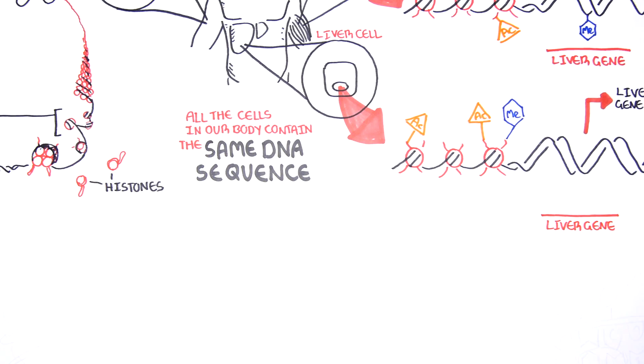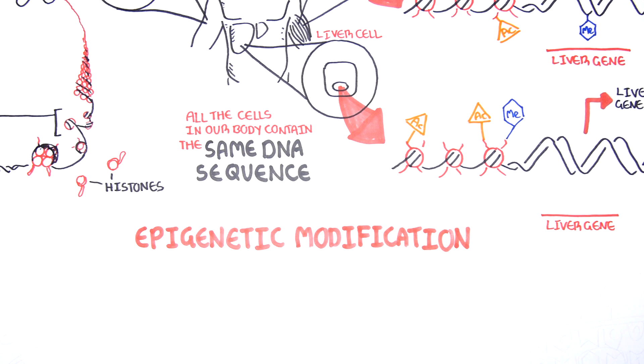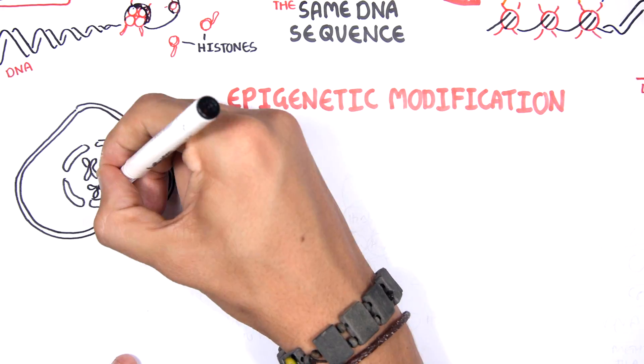These modifications are known as epigenetic modifications. Epi is Greek for above, above the genes, so modifications above the genes or on the genes. Epigenetic modification brings about lasting changes in gene expression.